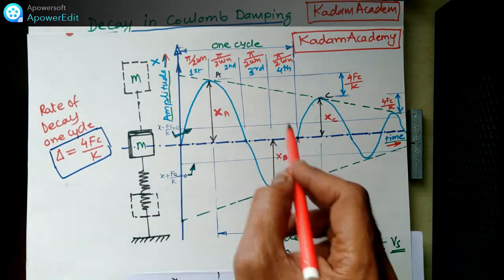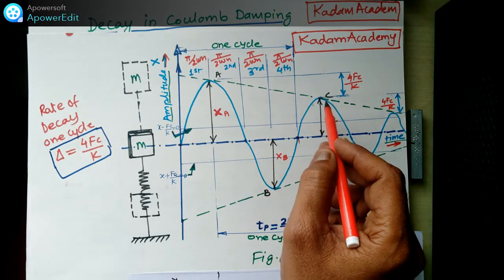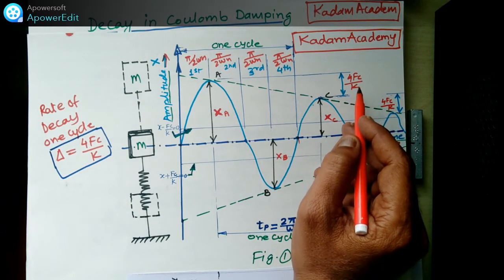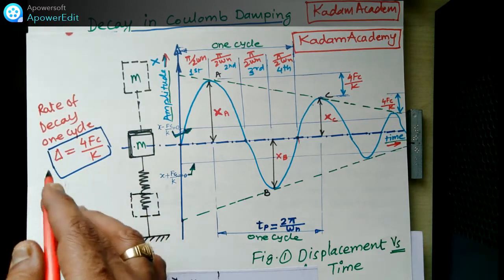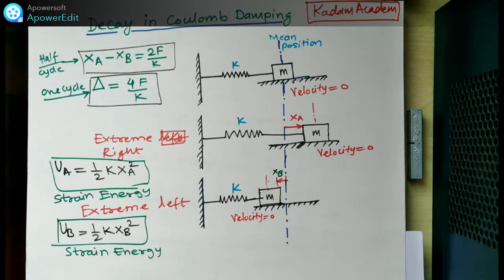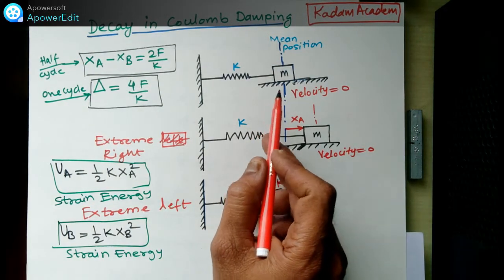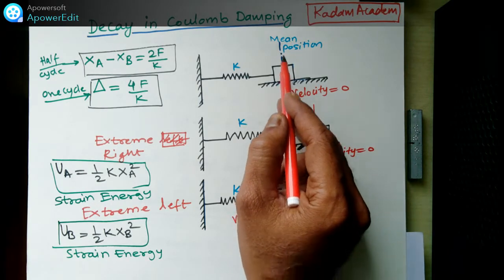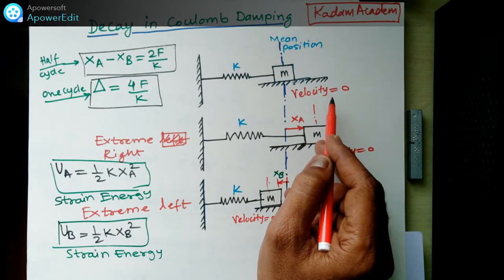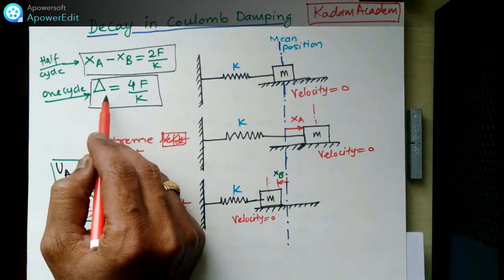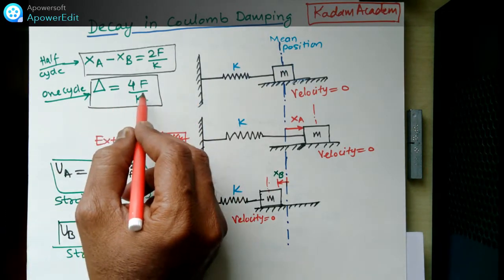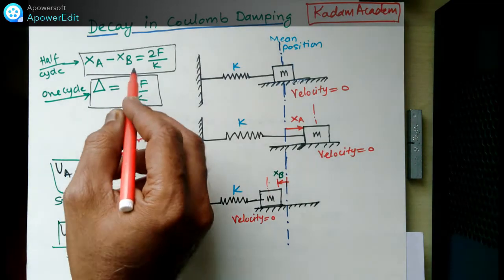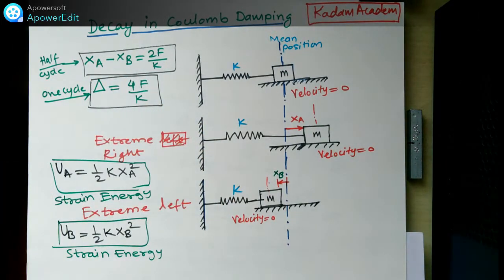After one complete cycle, the reduction in amplitude on one side is 4Fc/k. I will now prove this. This spring-mass system diagram shows the mean position where velocity is zero. We want to prove that for one complete cycle the decay delta equals 4Fc/k, and for a half cycle Xa minus Xb equals 2Fc/k.